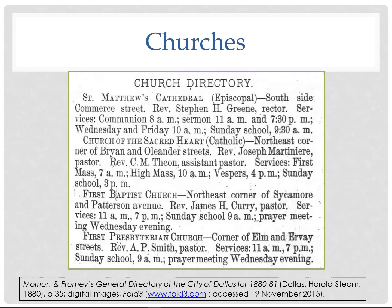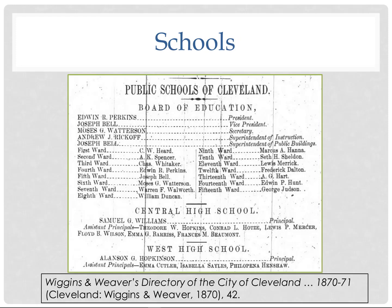Churches were also listed in city directories, which may give hints as to where your ancestors worshipped. You may know what faith community they belonged to, or you may not. Frequently you can find the church address and see which churches are close to where your ancestors lived. Schools are listed too — here we have a listing of the Board of Education members. In Cleveland in 1870 there were actually two high schools, West High and Central High, so if you're looking for high school records you'd need to check both.